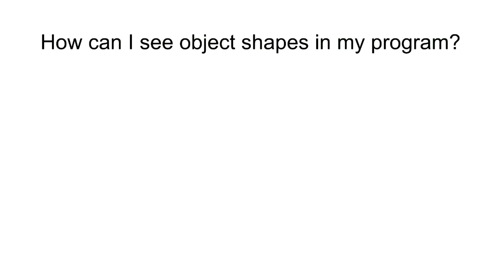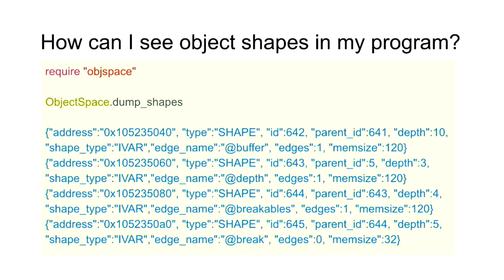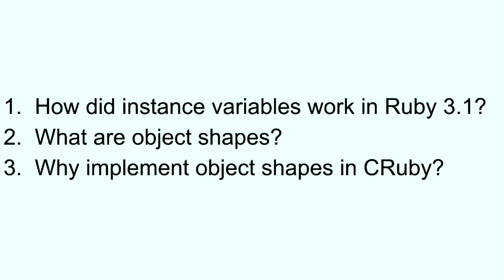The second question I get is: how can I see object shapes in my program? The answer is yes — we made a small API. Some folks might be familiar with ObjectSpace.dump_all, which gives you all your objects. We made ObjectSpace.dump_shapes, which points you to a file with a JSON representation of all of your object shapes. You can go look at them, and you can have some fun with the JSON to construct the tree and make cooler visualizations of your shape tree. These are the three questions we answered today. I really appreciate your time — thank you for inviting me to speak here.